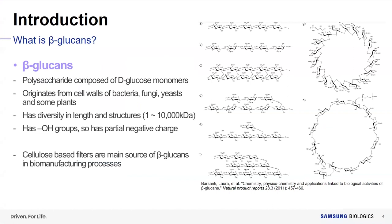What are beta-glucans? Beta-glucans are polysaccharides composed of glucose monomers and originate from bacteria, fungi, and some plants. They have diversity in length, structure, and molecular weight, varying from 1 kDa to 10,000 kDa. Beta-glucans have several hydroxyl functional groups and thus have a partial negative charge. In biomanufacturing processes, cellulose-based raw materials are a main source of beta-glucans. For example, depth filters used to remove cell debris or aggregates are one major source of beta-glucans.